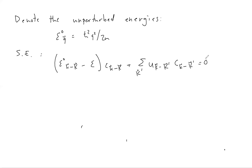We're going to discuss two cases. The first is where we don't have any degeneracies in the energy spectrum — we'll find out what happens to the energy at a particular wave vector when there are no other energies nearby. In the next mini lecture we'll talk about the case where the unperturbed energies are degenerate, which is the more interesting case where band gaps can arise. The non-degenerate case is simpler and illustrates our basic strategy, so let's do that first.